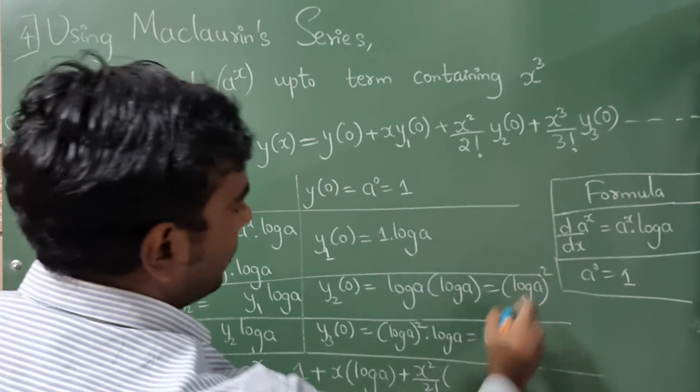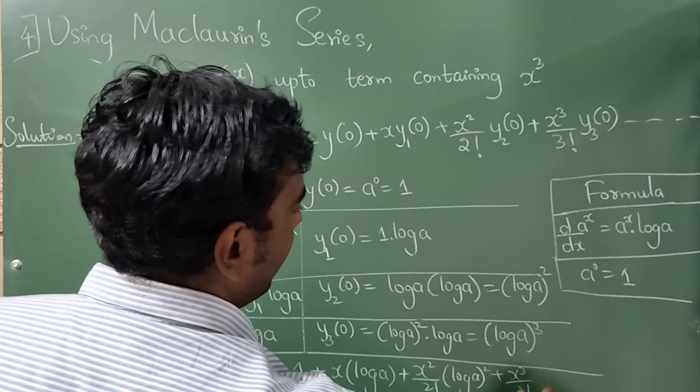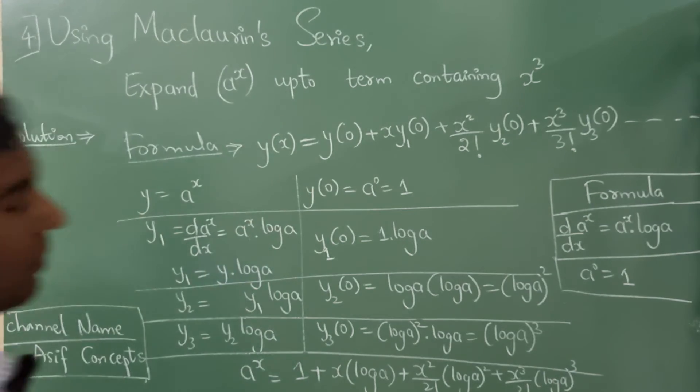Plus x squared over 2 factorial, y₂ is log a whole square. Plus x cubed over 3 factorial, y₃(a₀) is 3 factorial, so it is log a whole cube. So this completes your answer.